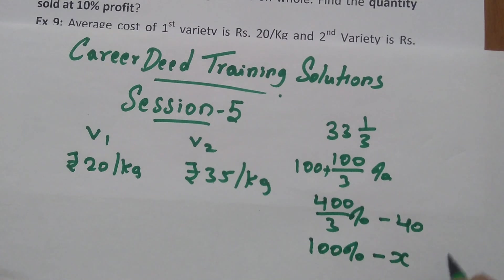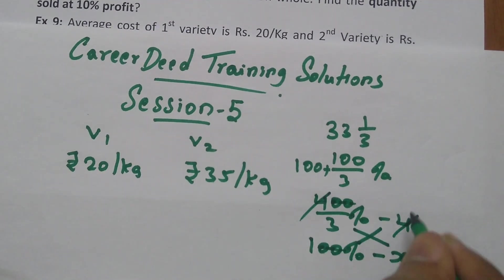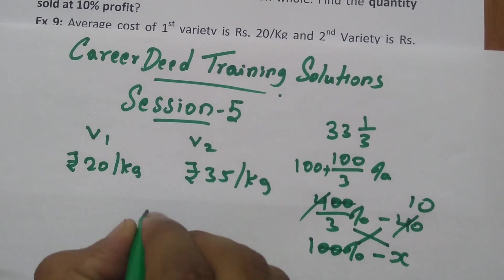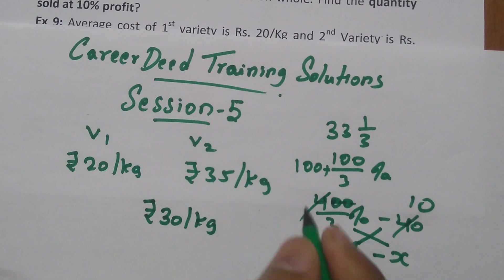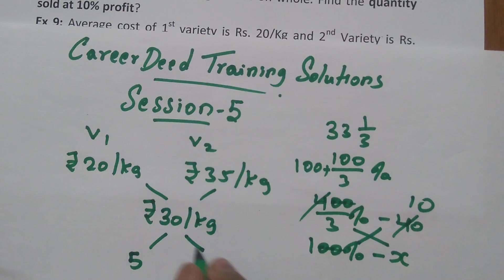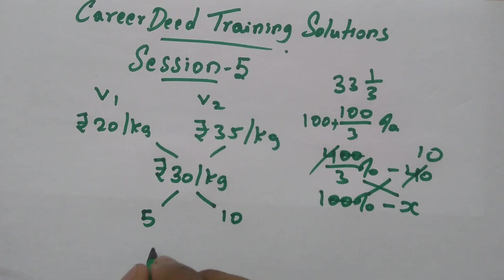Now use cross multiplication: cancel 4 and 40, 10×10×3 you will get 30. So here the mixed average cost is rupees 30 per kg. Now use allegation rule: 35-30 gives you 5, 30-20 gives you 10. So it is 1:2.